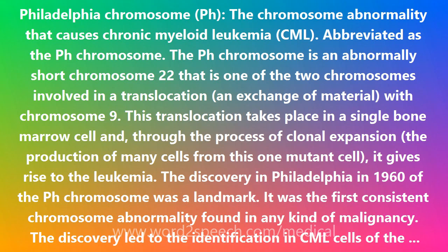The discovery of the Ph chromosome in Philadelphia in 1960 was a landmark — it was the first consistent chromosome abnormality found in any kind of malignancy. The discovery led to the identification in CML cells of the BCR-ABL fusion gene and its corresponding protein. ABL and BCR are normal genes on chromosomes 9 and 22, respectively.